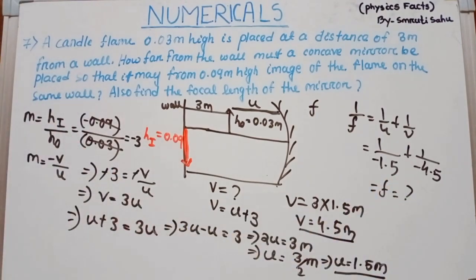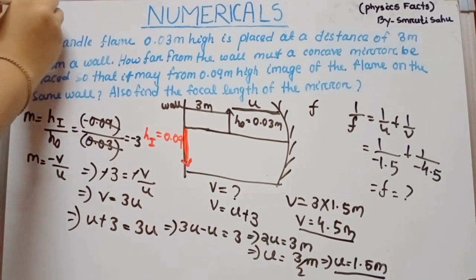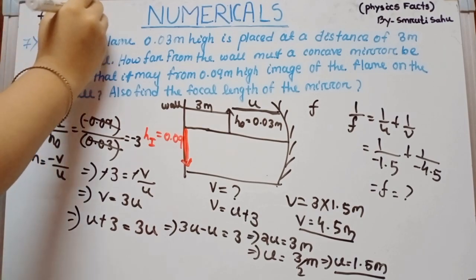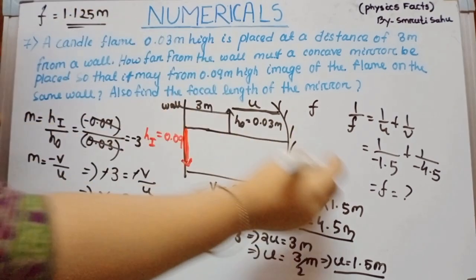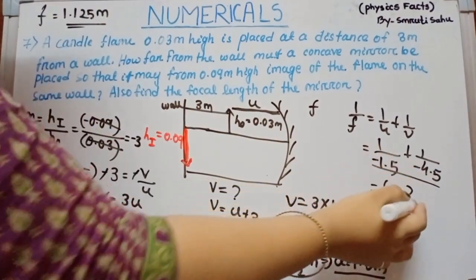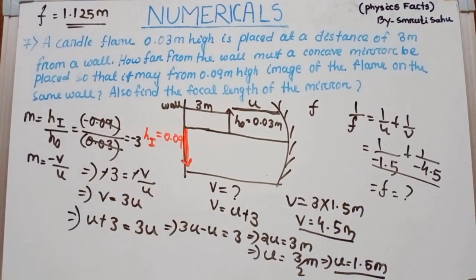Simplifying gives the focal length F = −1.125 m. This is the focal length of the concave mirror required to produce the image on the wall at the specified magnification.